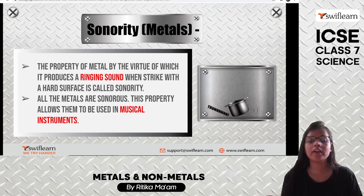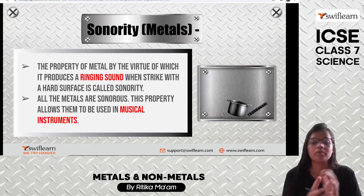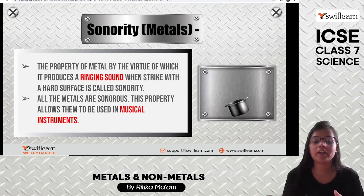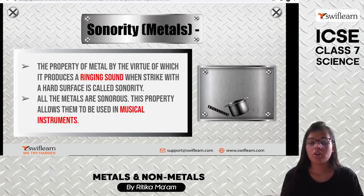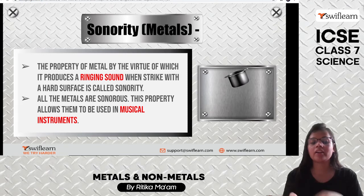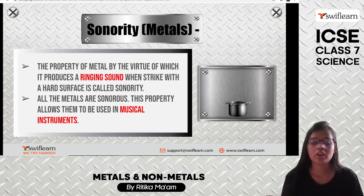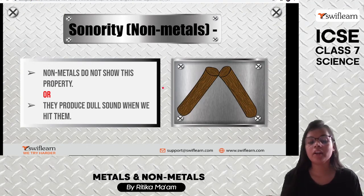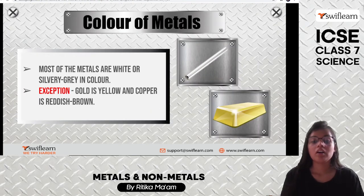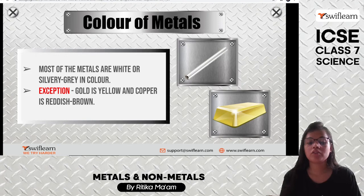Sonority is the property by which a metal makes a ringing sound when struck. So the property of any metal by virtue of which it makes a ringing sound when struck on a hard surface is known as sonority. For example, if you take an aluminium vessel and strike it, it makes a ringing sound. All metals are sonorous, and therefore we use them in musical instruments. Nonmetals do not show this property — they produce a dull sound when hit.